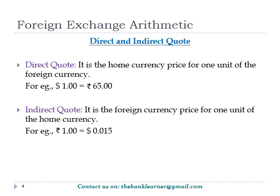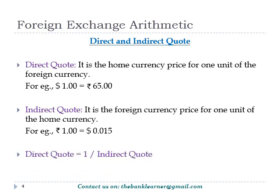The indirect quote is made in terms of foreign currency — that is, how much foreign currency is required for one unit of home currency. So, for the same Indian, 0.015 foreign currency is required for one rupee. From this, it is very clear that these quotes are inversely proportional to each other.